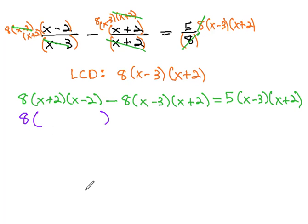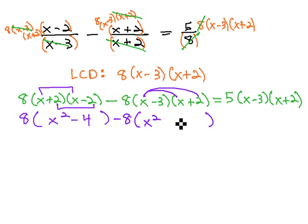Notice, with the 8 times, we have a sum and a difference. So we just have to multiply the first and last terms, giving us x² - 4, minus 8 times (x² + 2x - 3x - 6). I'm going to combine these terms in the middle: 2x - 3x to be -x - 6, just combining those like terms.